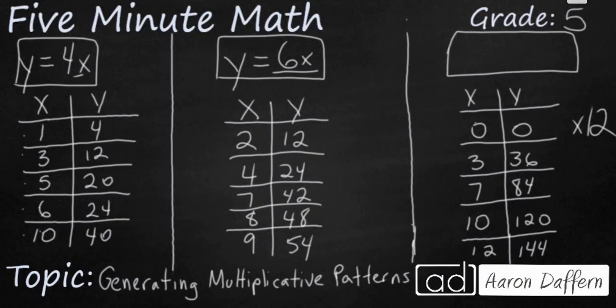When we're looking at our last problem, we're not going to get much help looking at our first pair 0 and 0. But when we're looking from 3 to 36, 7 to 84, 10 to 120, and 12 to 144, you'll see that multiplying by 12 gets you from your x to your y. So the equation is going to be y equals 12x.